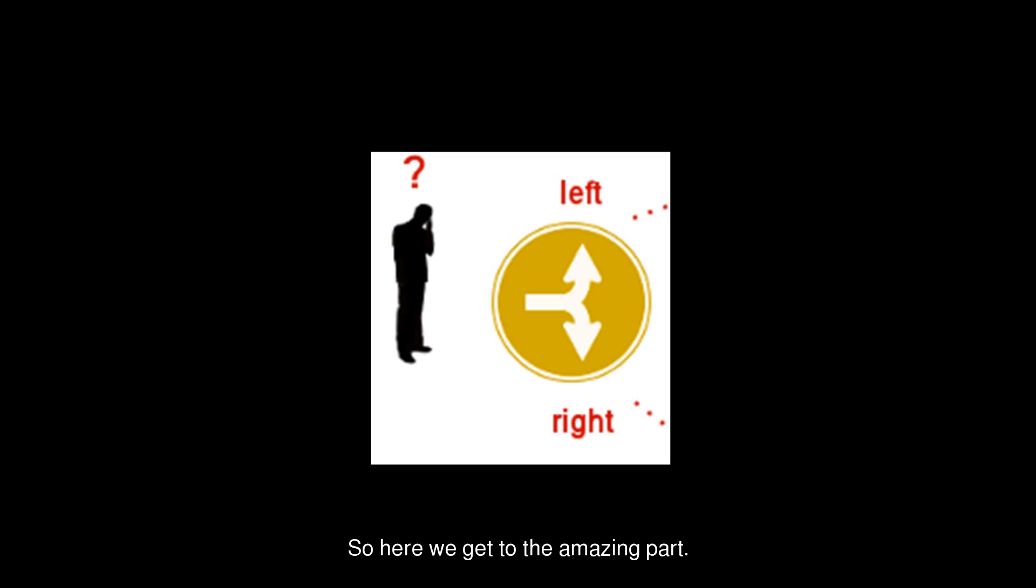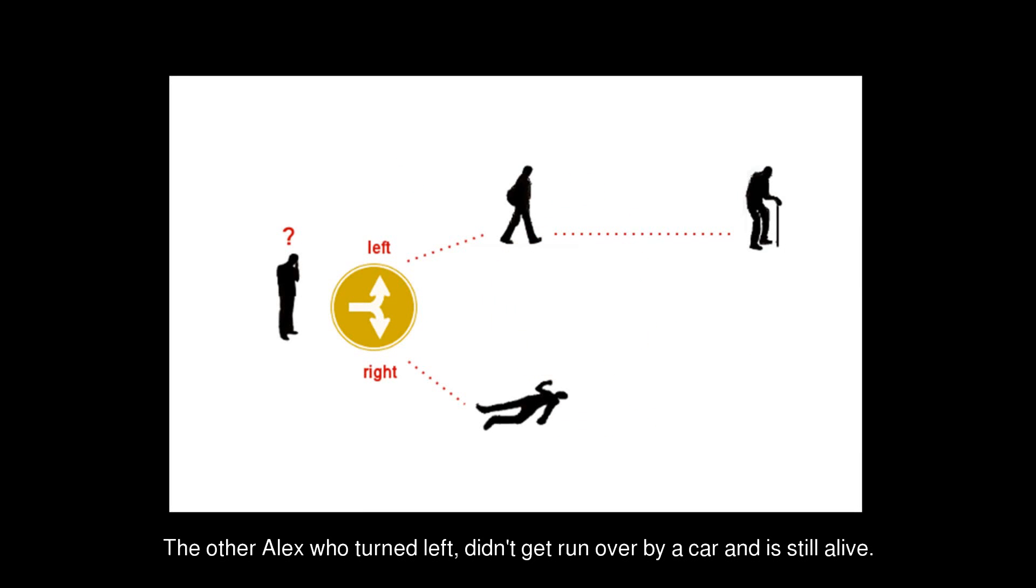So here we get to the amazing part. Imagine the Alex who turned right got run over by a car. He is now ceased to exist in this perspectival world. The other Alex who turned left didn't get run over a car, and was still alive. The future of this can still hold every possible Alex.